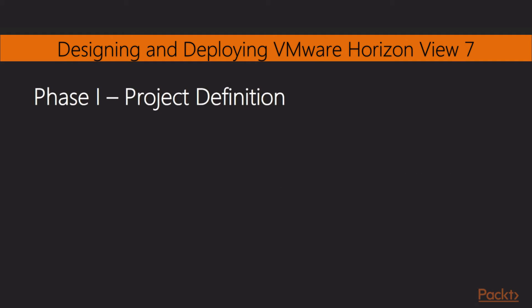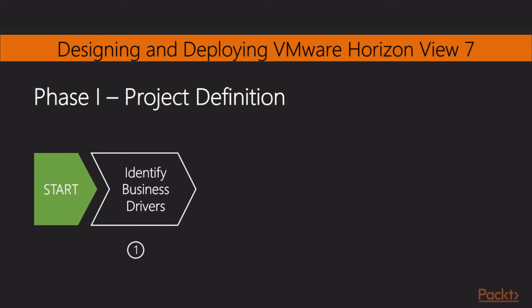Now let's dive a little deeper into the project phases, starting with phase one — the project definition. We'll start with identifying the business drivers. Before you jump headlong into your Horizon project, take a step back and ensure that you document exactly what you are trying to achieve. It can be very easy to get carried away with all the new shiny technological aspects of the solution, such as the installation and configuration of new hardware and software, such that the end goal is either lost or is not relevant to the business anymore.